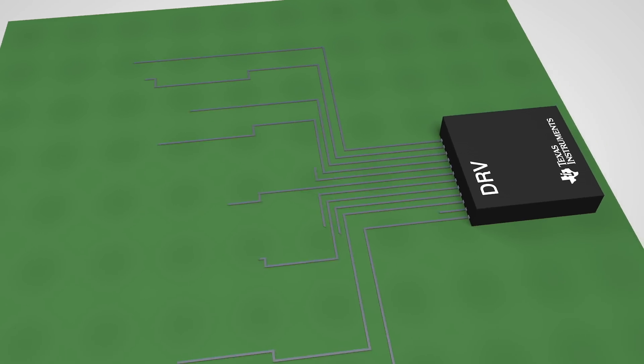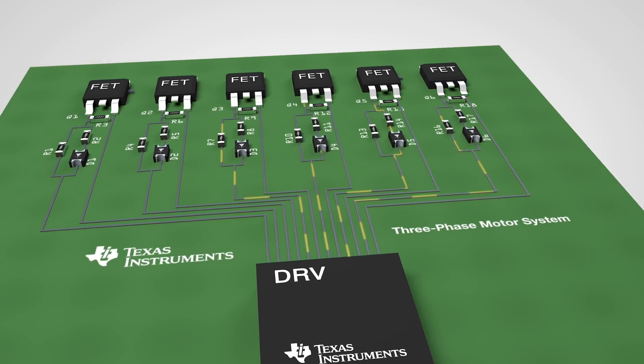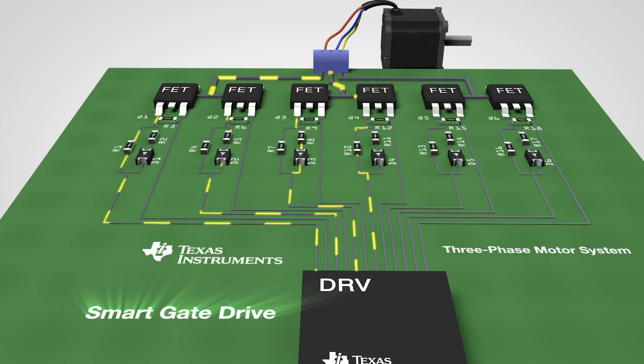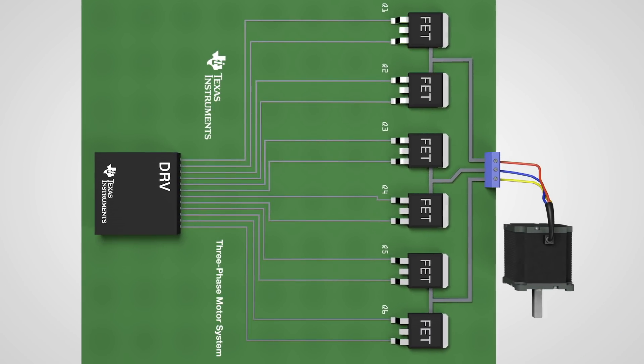Let's take a deeper look at the features and benefits. In traditional gate drive designs, each FET requires up to four external components to control current and prevent unintentional FET turn-ons. With Smart Gate Drive technology, up to 24 of these components can be integrated into the motor driver itself.